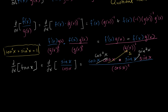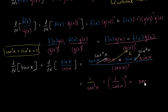So this nicely simplifies to 1 over cosine of x squared, which we could also write as cosine squared of x. These are two ways of writing cosine of x squared, which is the same exact thing as secant squared of x, since 1 over cosine of x is just secant of x. And so that's where it comes from. If you know that the derivative of sine of x is cosine of x, and the derivative of cosine of x is negative sine of x, we can use the quotient rule — which comes straight out of the product rule — to find that the derivative of tangent x is secant squared of x.